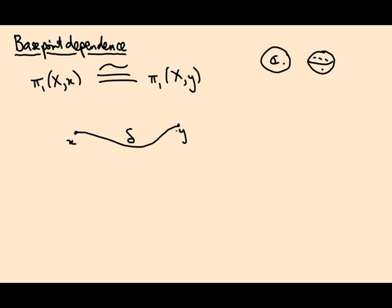Moreover, if you pick a different path, you might get a different isomorphism between these groups. An isomorphism is a thing. It's a map from one group to the other, which has an inverse. But you can get different isomorphisms from different paths.